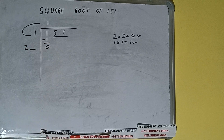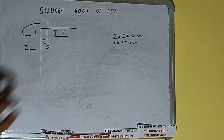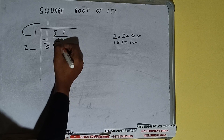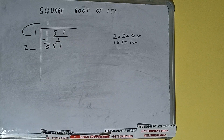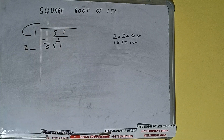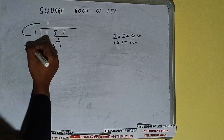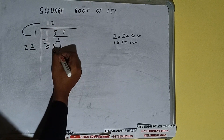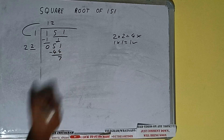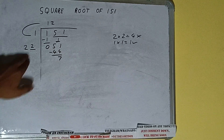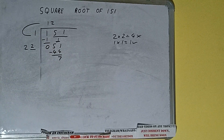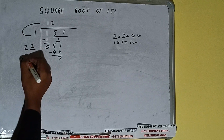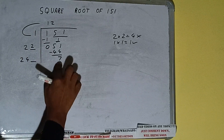Write it here and keep a digit extra — this number we need to make it bigger. Bring the next pair down and it will be 51. Whatever number we write here we have to write here also. If we write 2 here and 2 here, it will be 44. Subtract: 7 will be left. 22 into 2 we did, so add both: 22 plus 2 will be 24. Write it here and keep a digit extra.